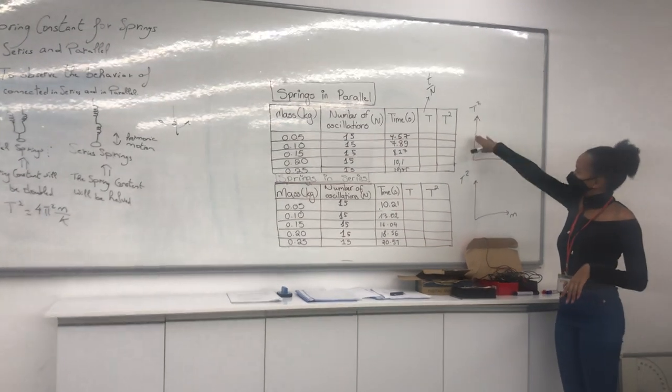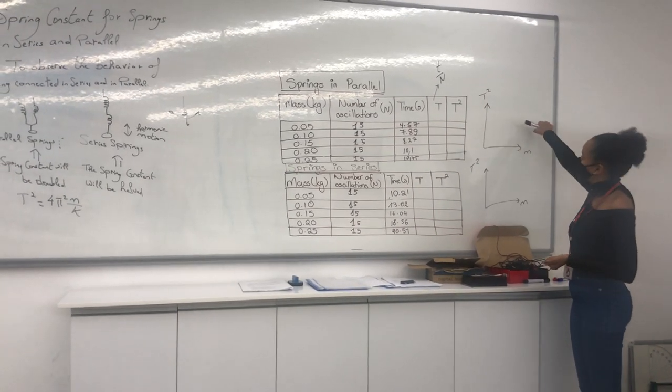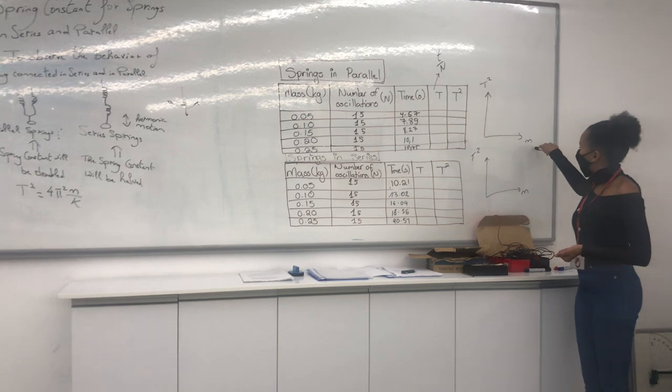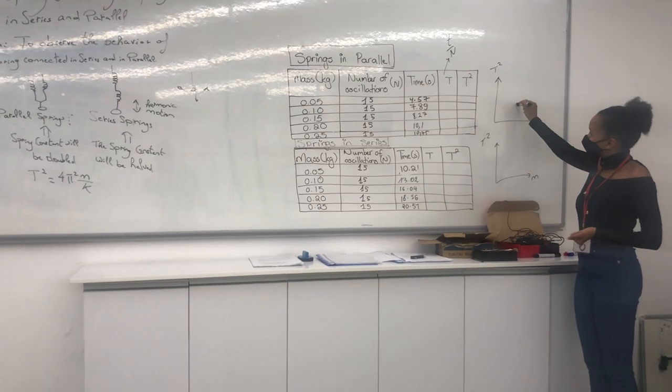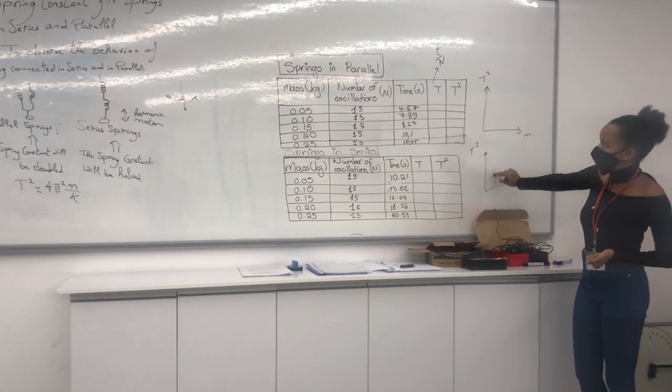The next, the last thing you will do is your graphs. You draw your graphs of t squared versus m for series, for parallel, and for series. Now, let's look at how you're going to perform the experiment today.